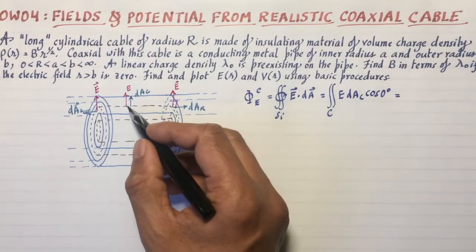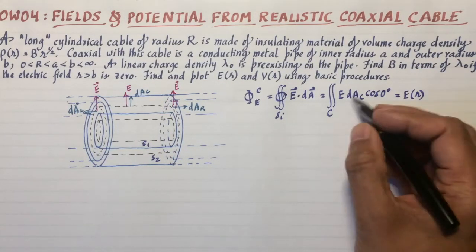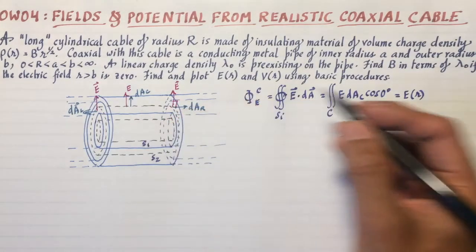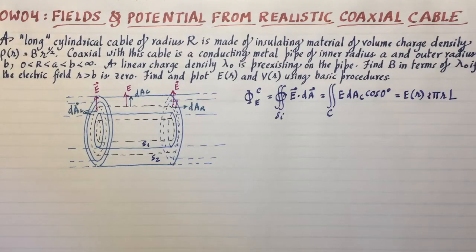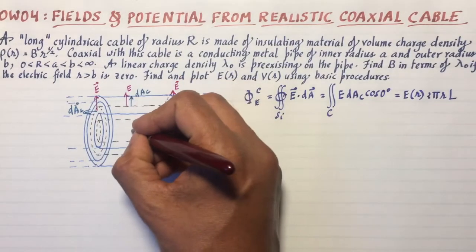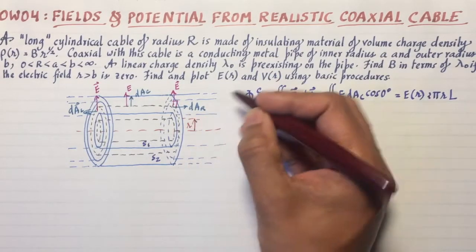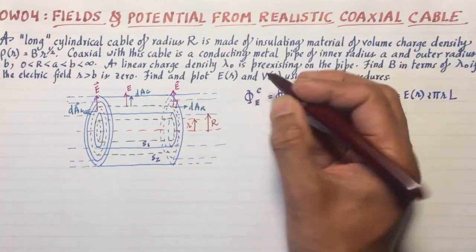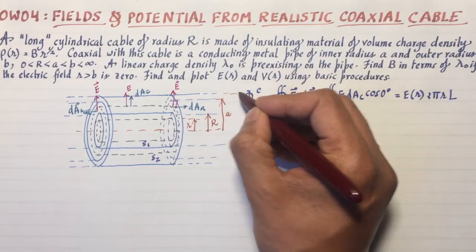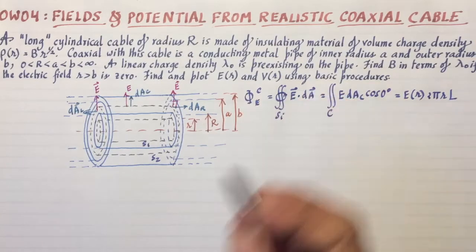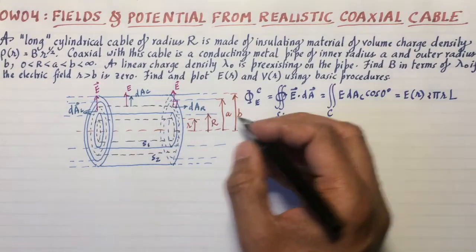S_i, integral E dot dA. Well, in the interest of brevity, I will not write everything out. E dot dA_R and E dot dA_L are zero because of the nature of the angle here, it's 90 degrees. So I won't even write those terms. And the only term that survives is the curved term. So that's going to be the integral over the curved surface C, E dA_C, cosine zero degrees.